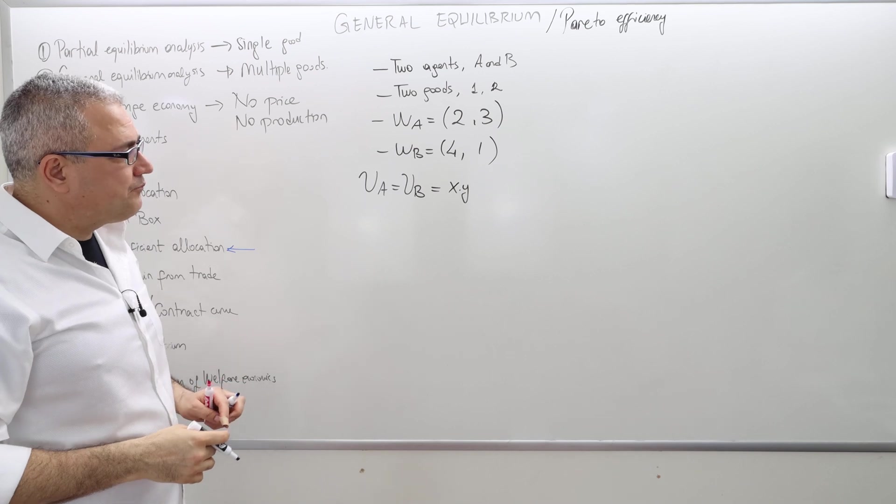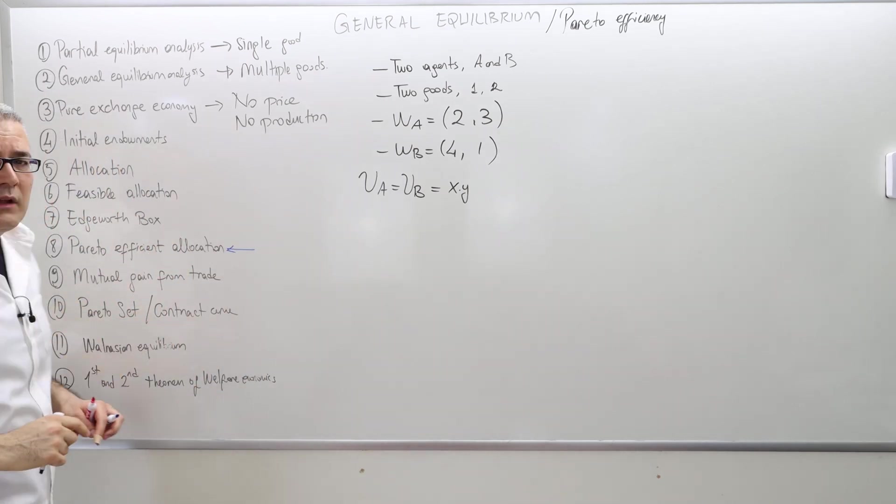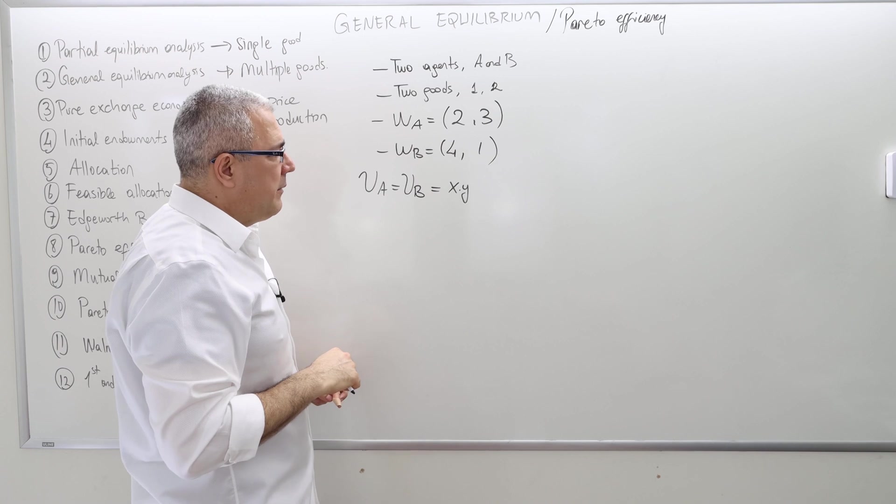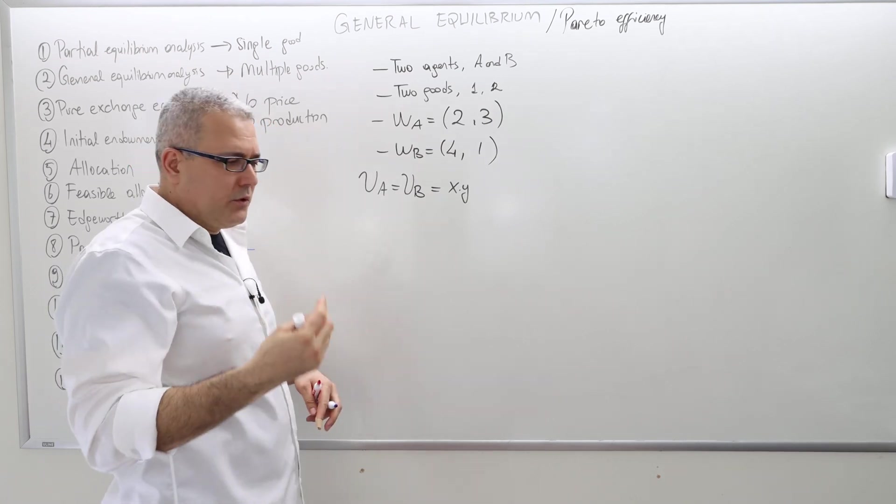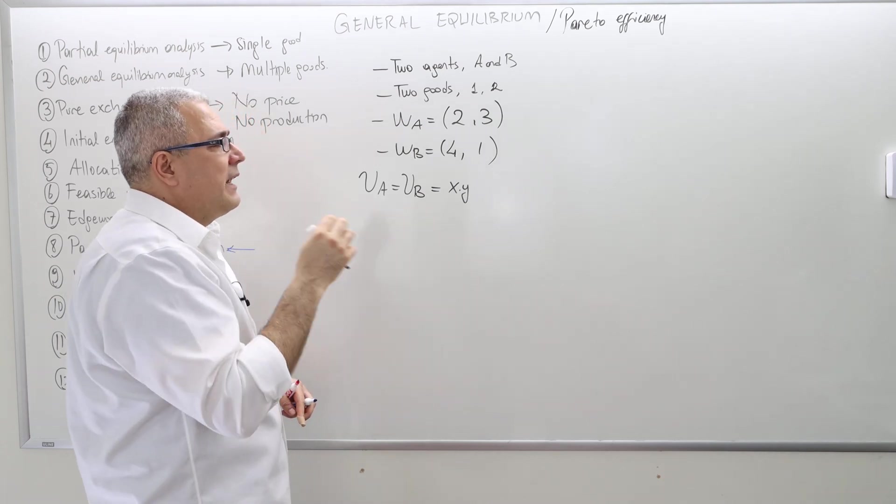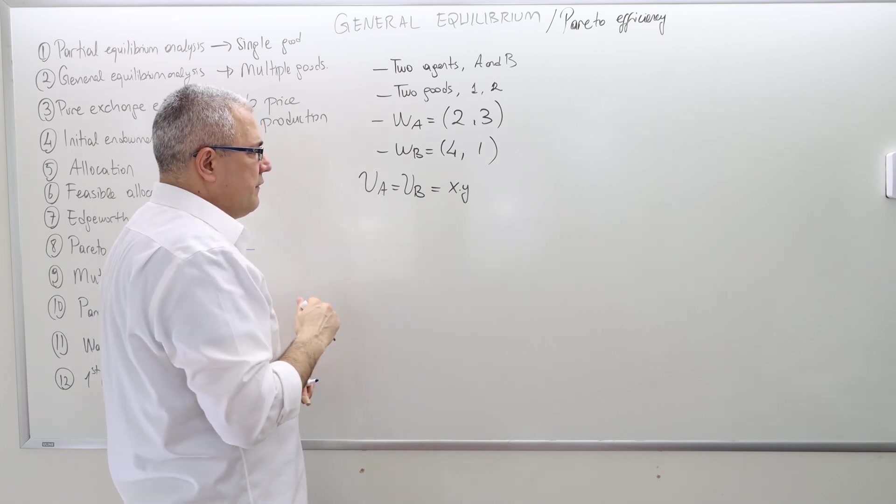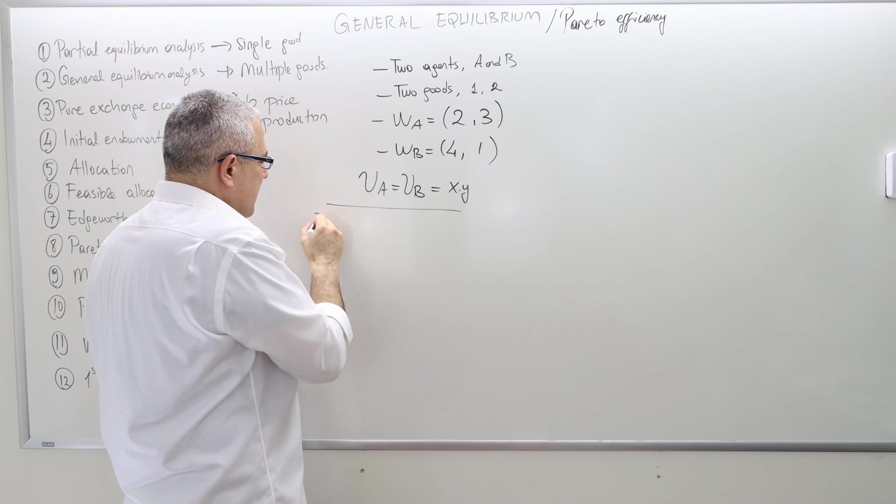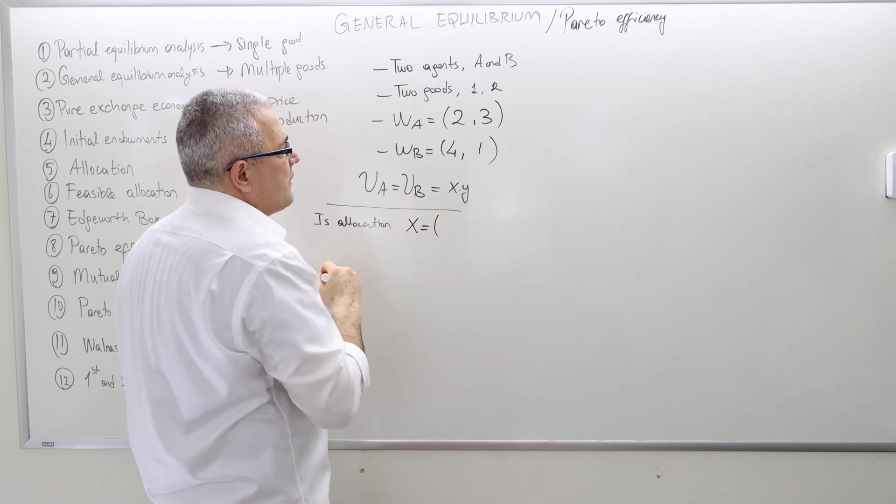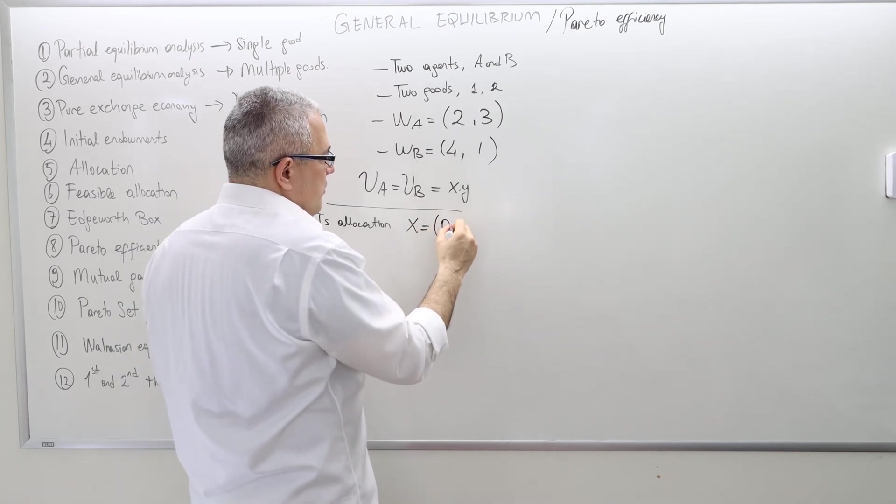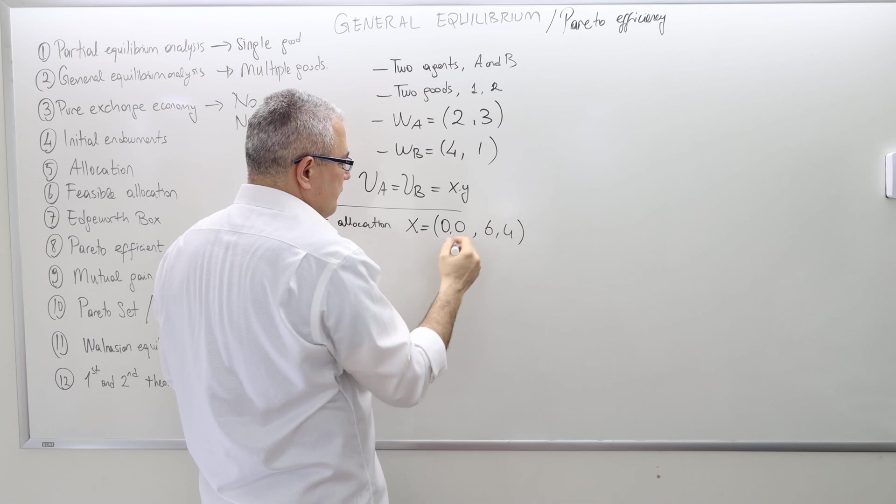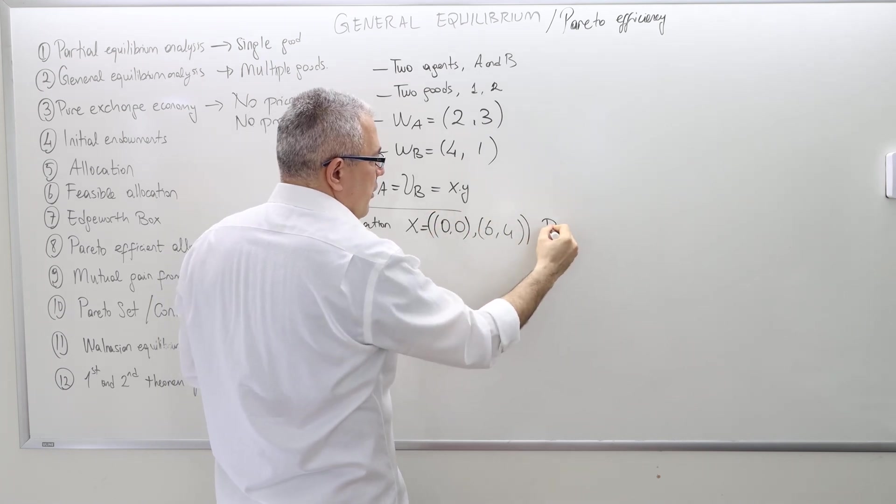In the next video, I will calculate the Pareto set and find all Pareto efficient allocations. But here, I'm going to make several observations with numerical examples to understand what Pareto efficiency means. Here's an example: Is allocation x, which is (0,0) and (6,4), Pareto efficient?